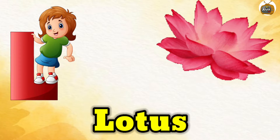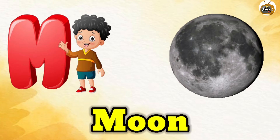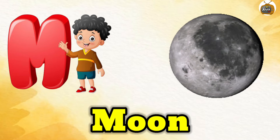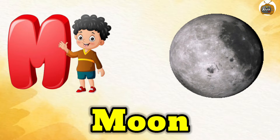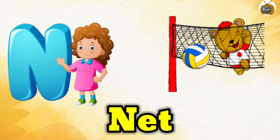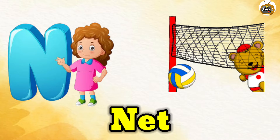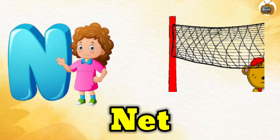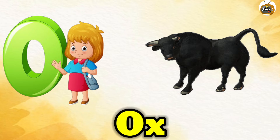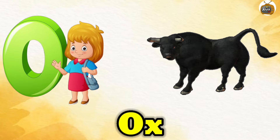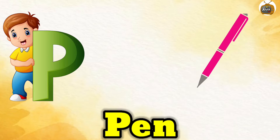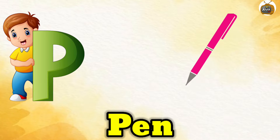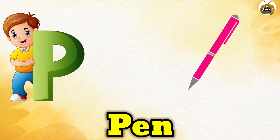K for kite, L for lotus, M for moon, N for net, O for ox, P for pen.